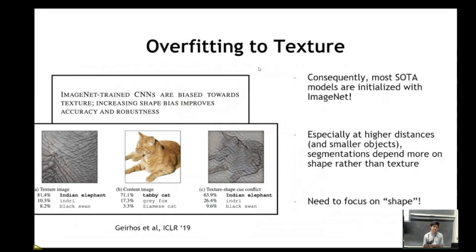Consequently, most of our segmentation models are initialized with something like ImageNet and likely suffer the same type of issues. This explains why segmentation networks fail at higher distances because farther away and smaller objects rely more on shape rather than texture because the textures get obfuscated at low resolutions as it goes farther away.